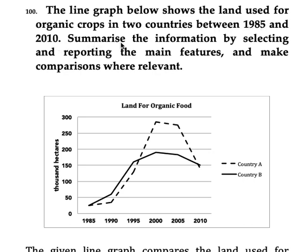Summarize the information by selecting and reporting the main features and make comparisons where relevant. On the X axis we have the years and on the Y axis we have units in 1000 hectares. This dashed line is for country A and the solid line is for country B.